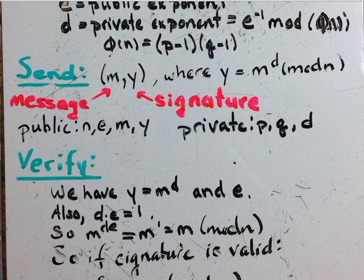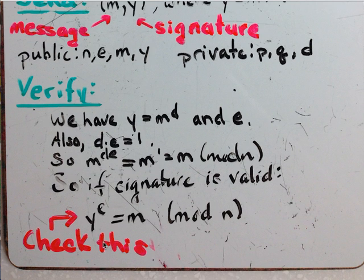So in order to check that this is correct, what we want to check is Y to the E, which is the same thing as M to the D E, and find out does it equal to M. If Y, which we received as part of the message, to the E, the public encryption exponent, equals M mod N, then the signature is considered valid.